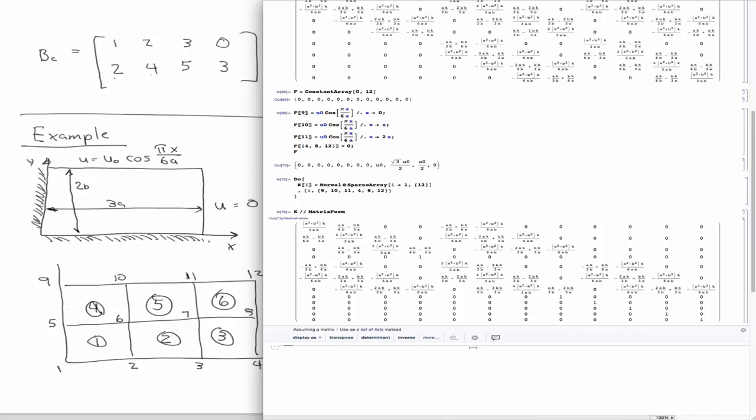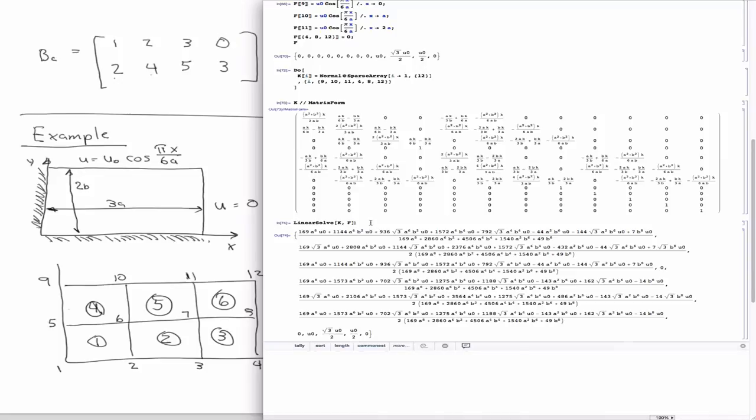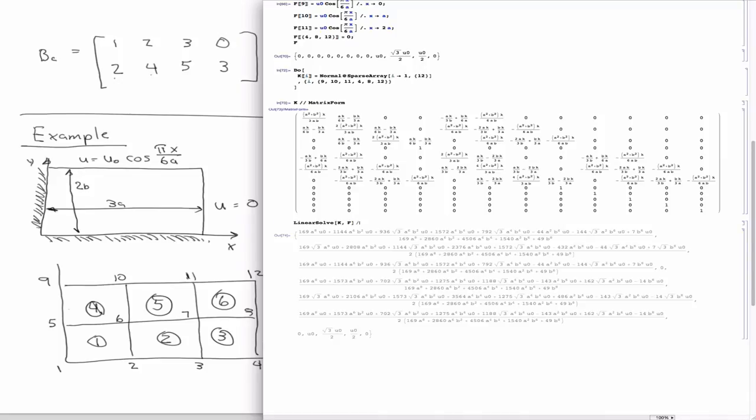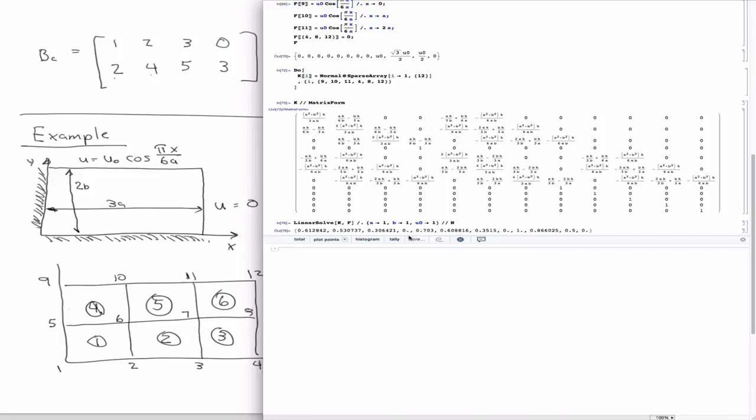So now if we look at K, you can see the ones on the diagonal here in the locations where you have a fixed boundary condition. Okay, so with that, we're ready to solve. We can say linear solve K F, and that's the solution. We'll plug in some values. We'll say that A is equal to 1, B is equal to 1, U0 equal to 1. So then there's our solution.